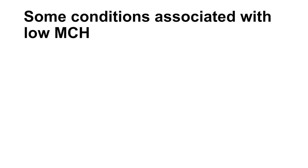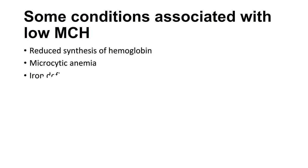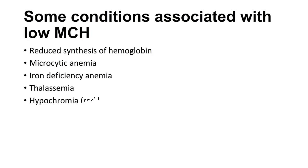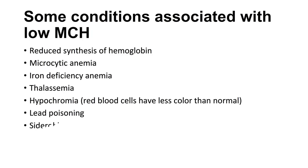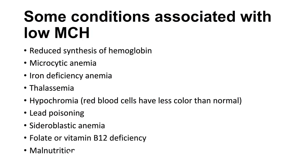Some conditions associated with low MCH include: reduced synthesis of hemoglobin, microcytic anemia, iron deficiency anemia, thalassemia, hypochromia — where red blood cells have less color than normal — lead poisoning, sideroblastic anemia, folate or vitamin B12 deficiency, and malnutrition.